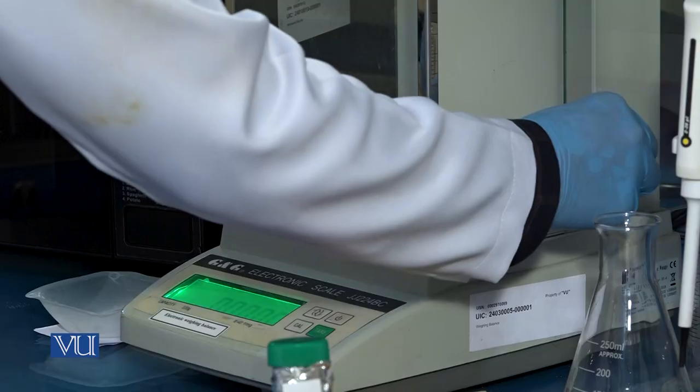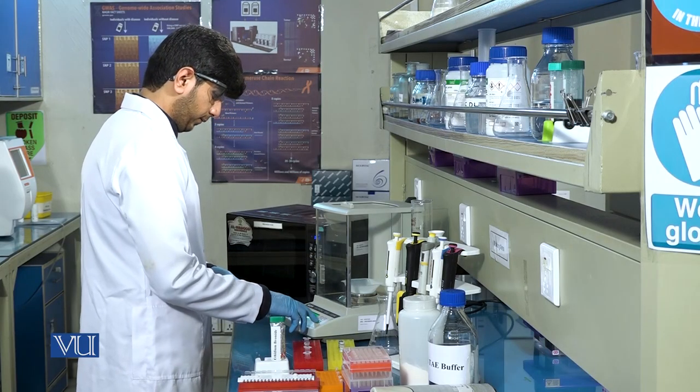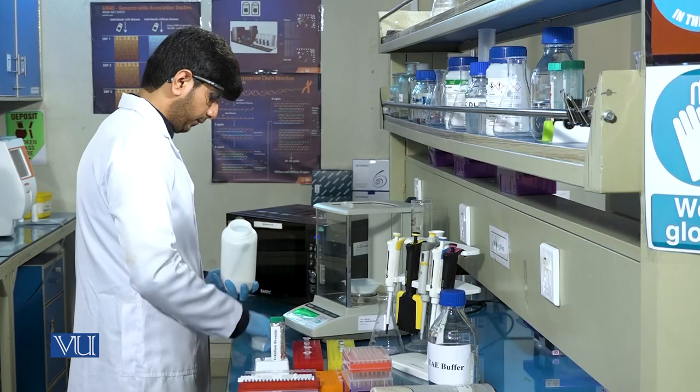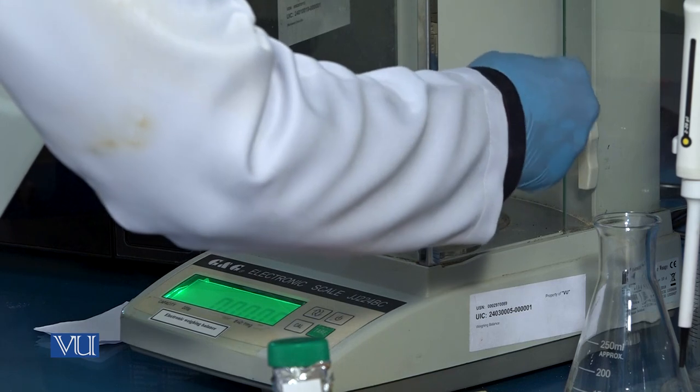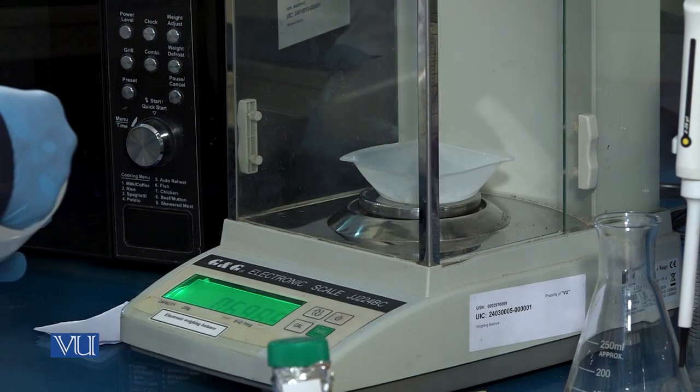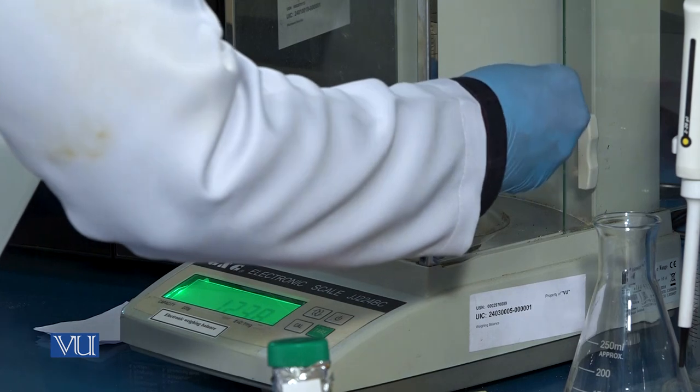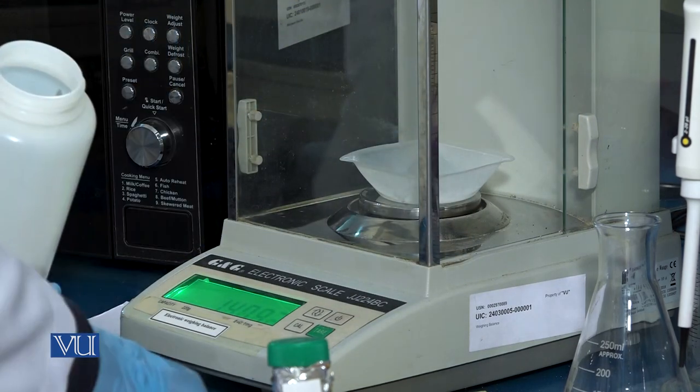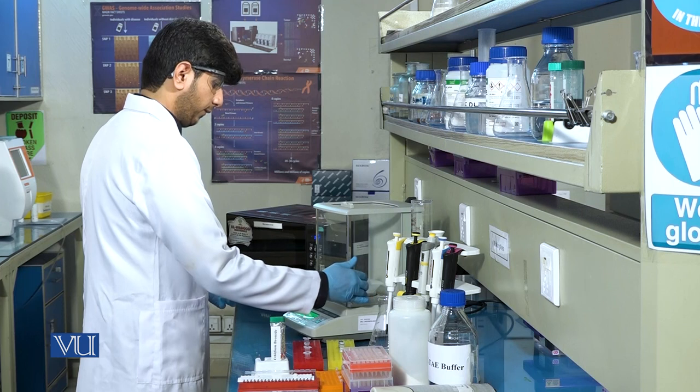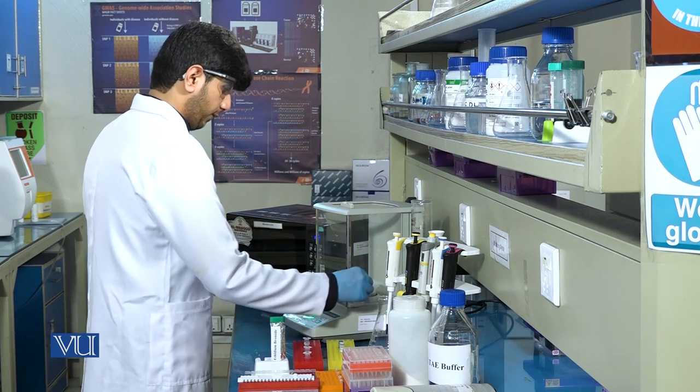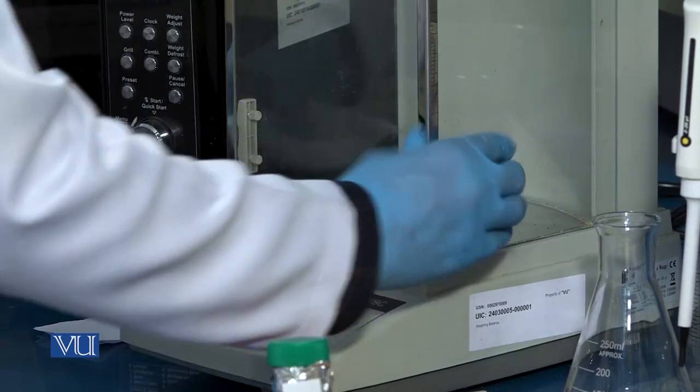First of all, we will weigh the agarose powder with the help of weighing balance. We will weigh 0.8% to 1% agarose gel. For this purpose, we will weigh 1 gram of agarose and we will add into 100 ml of TAE buffer.